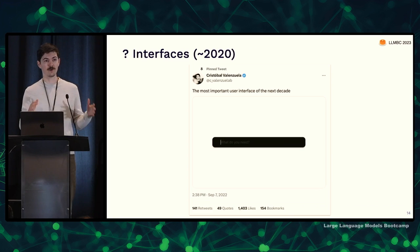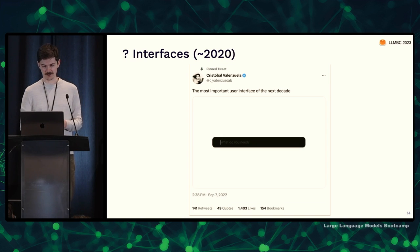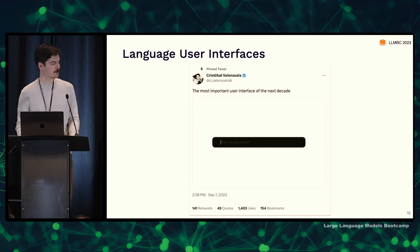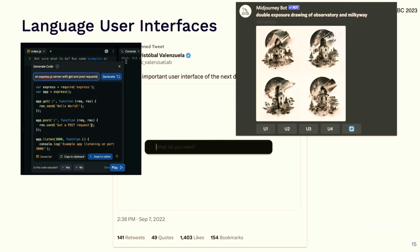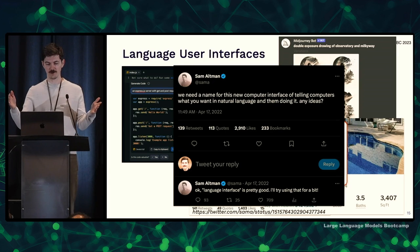Now at the beginning of this decade, we are at another step change in interfaces. It doesn't really have a name that people have agreed on, but it's a text box that just says 'What do you need?' and it's the most important user interface of the next decade. A good name is language user interfaces — something where you can bring up a command palette and get what you want, or type what you want to see and it gives it to you, or maybe type what you want to do and the AI does it for you.